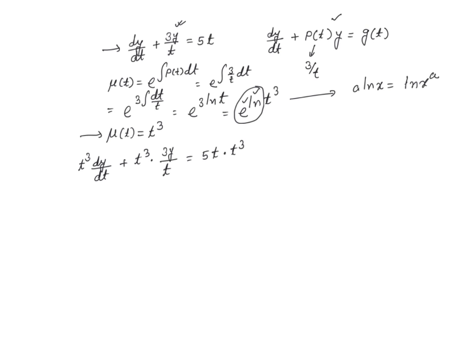So t³ dy/dt plus, if I simplify this, it is going to be t goes into t³ t² times, so it is going to be 3t² y equals 5t to the power 4.